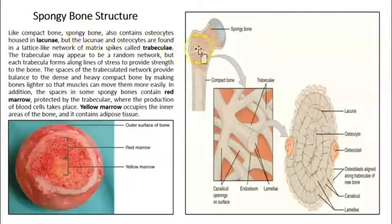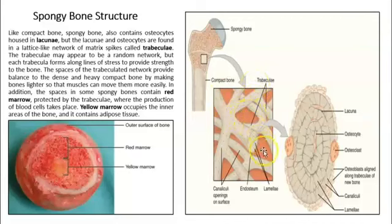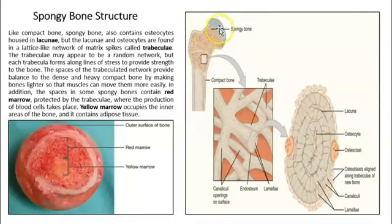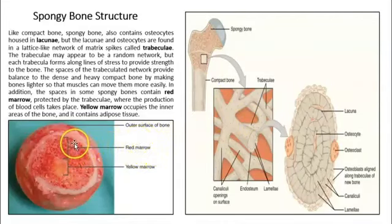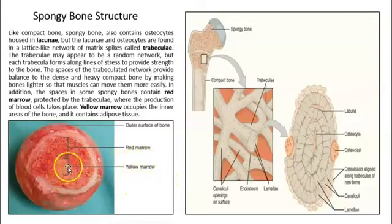Spongy bone forms like spikes that create a structure with many holes — that is why it is called spongy bone. It is strong, reduces the weight of the bone by having spaces, and is found especially in areas where stress is concentrated. The spaces within spongy bone hold bone marrow. There are two kinds: red bone marrow, where red blood cells are created, and yellow bone marrow, which is fat.